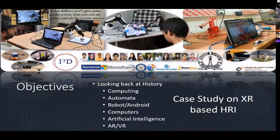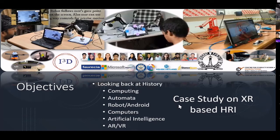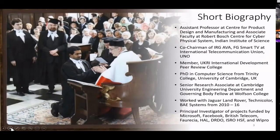We will look at the history of computing, automata, and the terms robot and android — which we now use to refer to automated agents. We'll also look at computers, AI, and AR/VR, because these all come together when we talk about human-robot interaction. In particular, we'll look at a study using extended reality or immersive media to control a robotic agent, presented chronologically based on technology developed in our lab over the last three years.